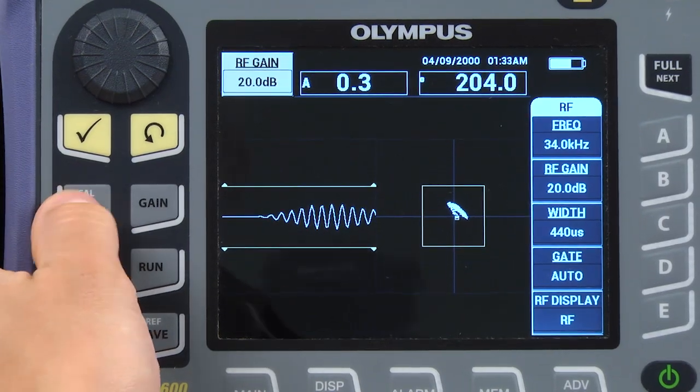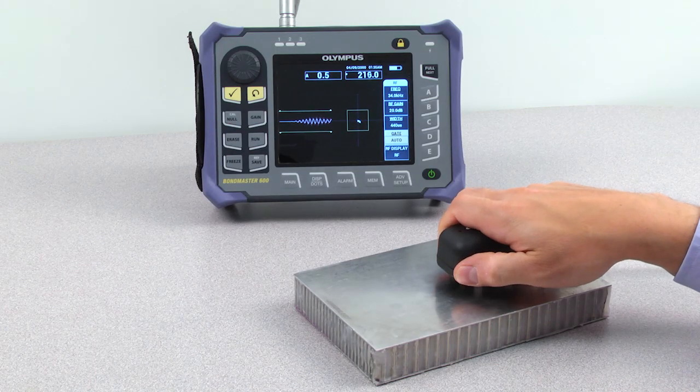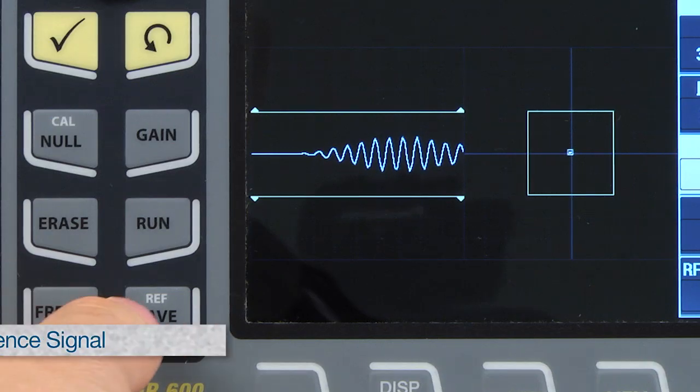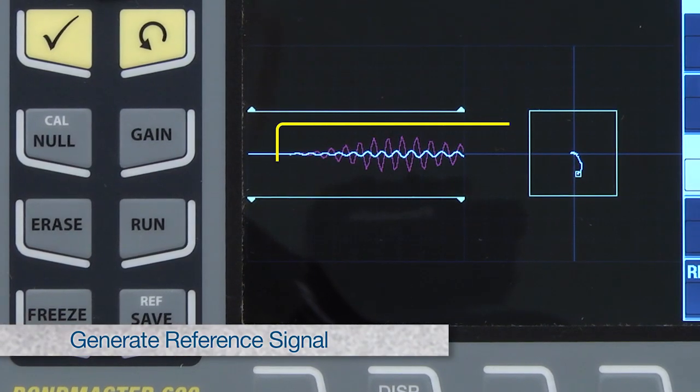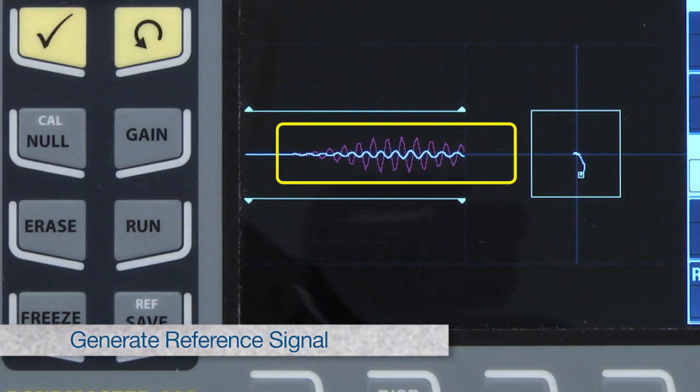Press the NULL key while keeping the probe on a defect-free area. Press and hold the SAVE key until a short beep is heard. The signal will be displayed in the background. This is the reference signal.